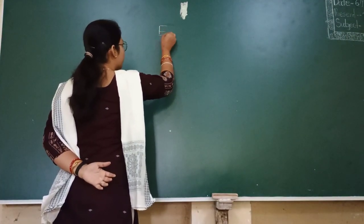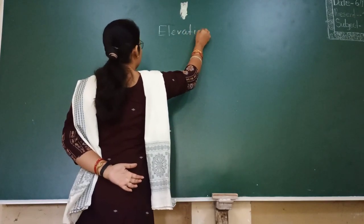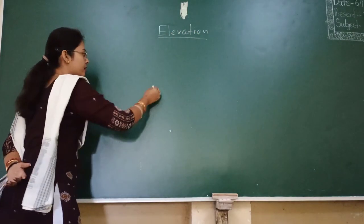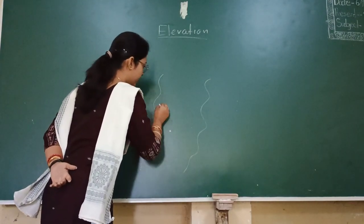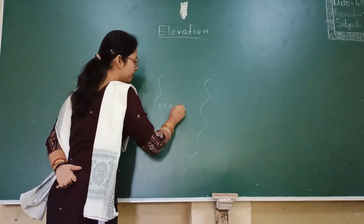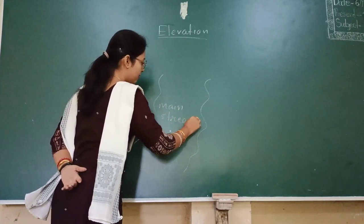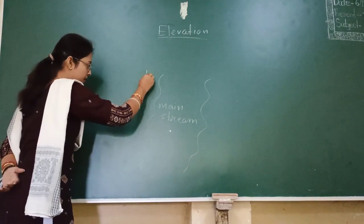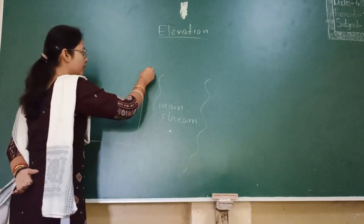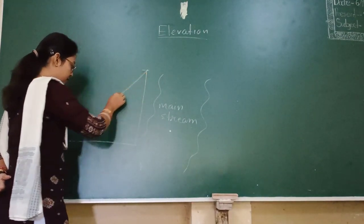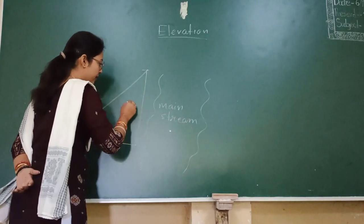First we will see the elevation view — the elevation view of a bridge. This is the main stream of the bridge. First of all, we will see the abutment wall. This is the abutment of the bridge. This wall is known as abutment.